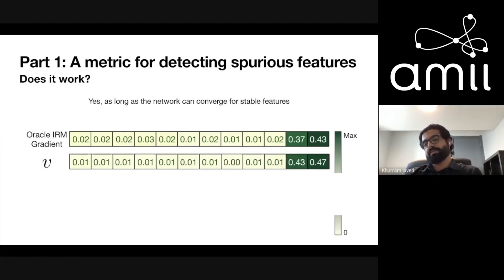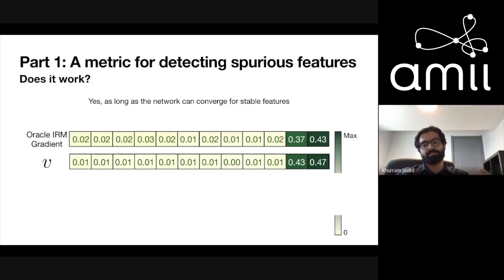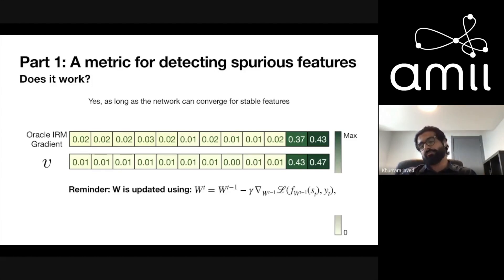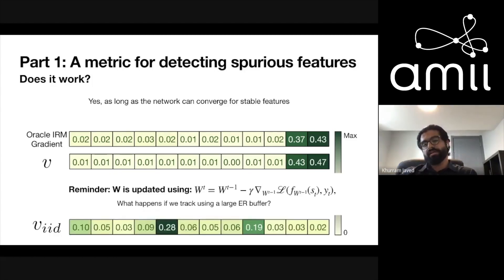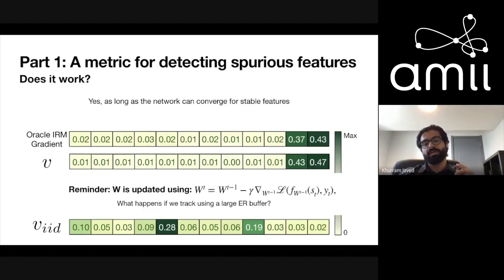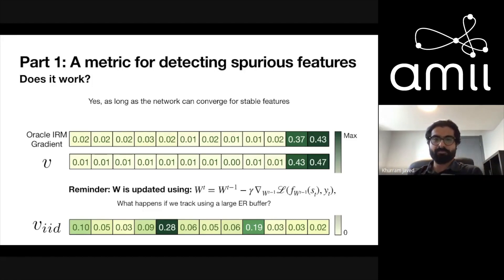The online variance estimate agrees well with the oracle IRM gradient — they're not computing the exact same thing, but they capture the same information. One important note: if you're learning online using the latest sample and instead use a large experience replay buffer to compute the same variance estimate, it won't work. When you sample IID from an experience replay buffer you lose the temporal information needed to track the variance of the weight, which is important for detecting spurious features as I define them.